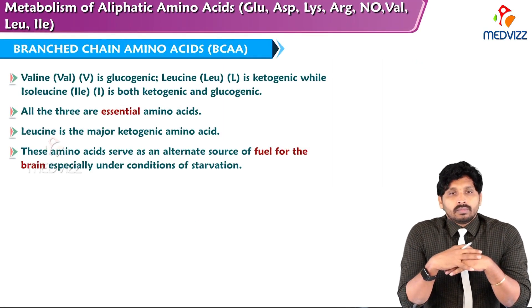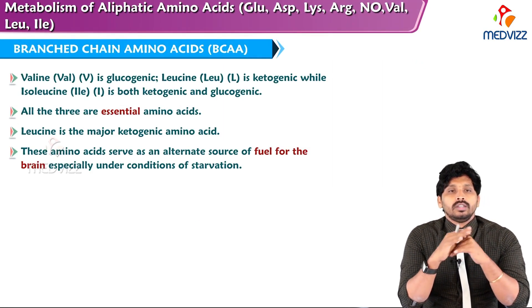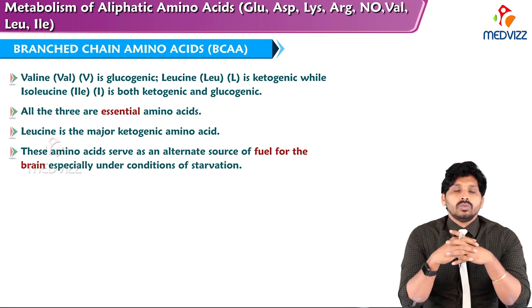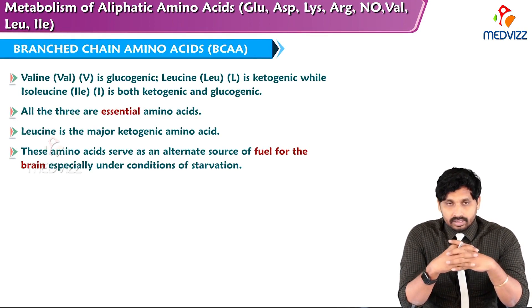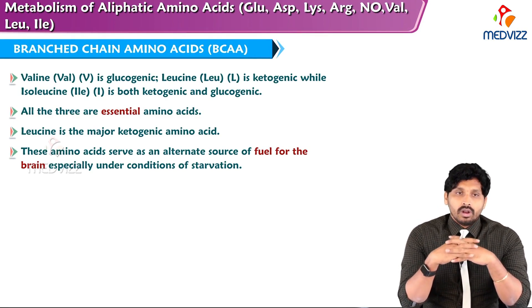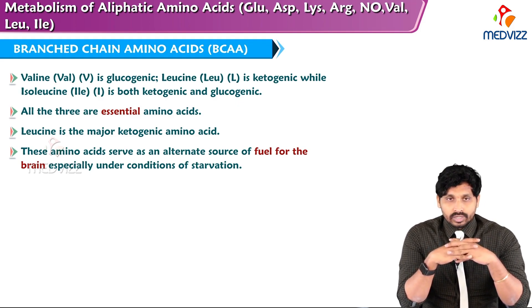Hello everyone, myself Dr. Suresh, professor of biochemistry, and in today's video we'll discuss about the metabolism of branched chain amino acids. There are three branched chain amino acids: valine, leucine, and isoleucine.